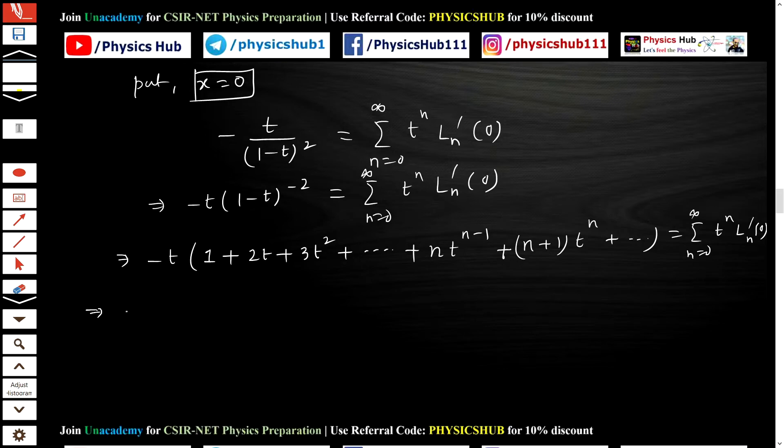Now the left-hand side is giving you -t - 2t^2 - 3t^3 - ... - n*t^n - (n+1)*t^(n+1) - ... equals the sum from n=0 to infinity of t^n * ln'(0).